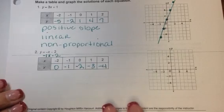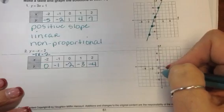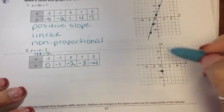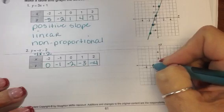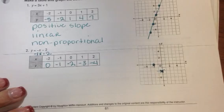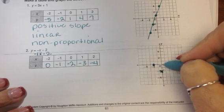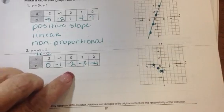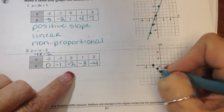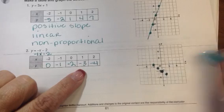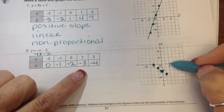Now I'm going to plot the points. We are sitting at (-2, 0), so I'll put a point there — I initially said (0, -2) by mistake, so we go back to negative 2 on the x-axis. Then (-1, -1), then (0, -2), then (1, -3), then (2, -4).